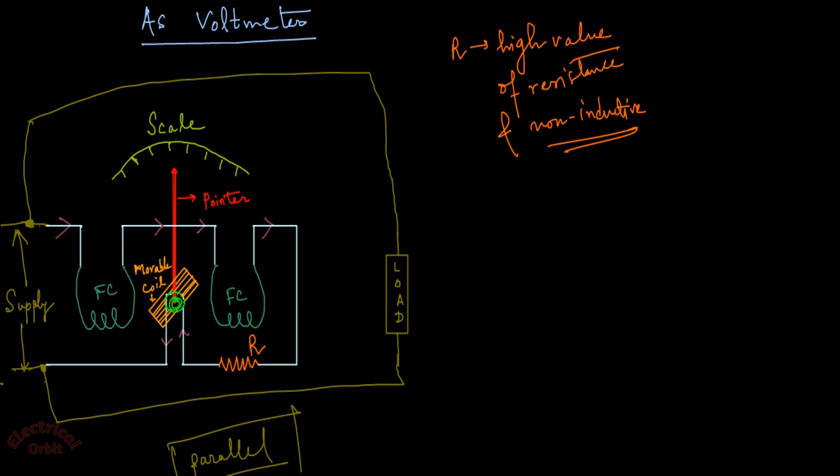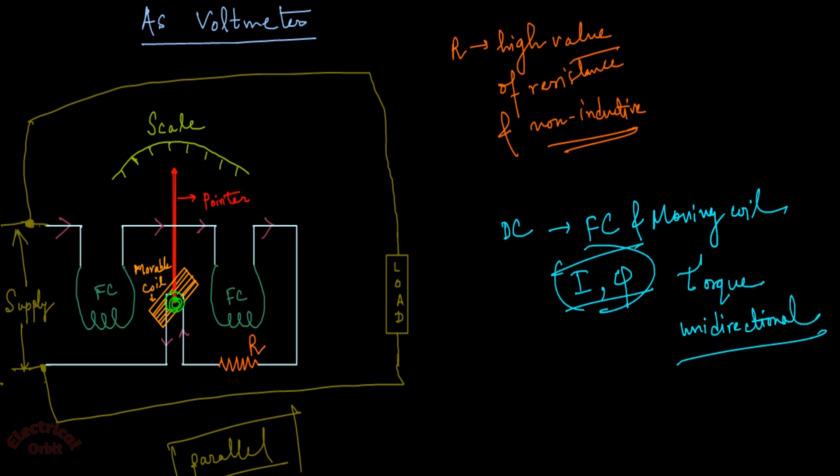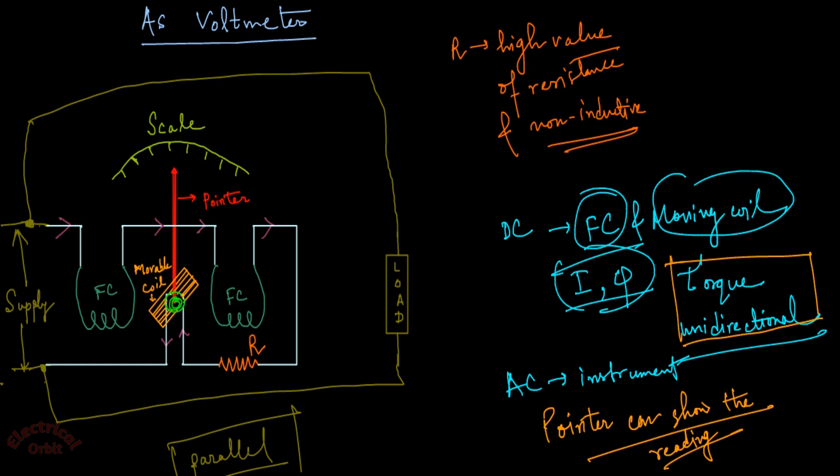I think the concept is clear to everyone. Now I will ask you a question: if we apply DC to this instrument, the fixed coil and moving coil will generate DC current and DC flux, so we can get a DC torque which is unidirectional. But when we apply AC to the instrument, how do the fixed coil and moving coil generate an unidirectional torque so that the pointer can show us the reading? Answer briefly in the comment section below. If you think a little bit, I think you can give the answer. Thank you.